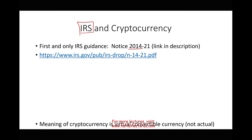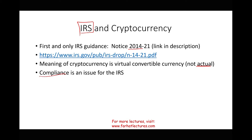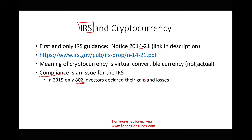The first thing you want to know is the meaning of cryptocurrency. It's a virtual convertible currency, not actual currency. The IRS doesn't consider cryptocurrency like the peso, yen, or euro. The IRS wants to make sure individuals trading cryptocurrency are declaring their gains. In 2015, only 802 investors declared that they traded and made profit — that's clearly under-reporting.